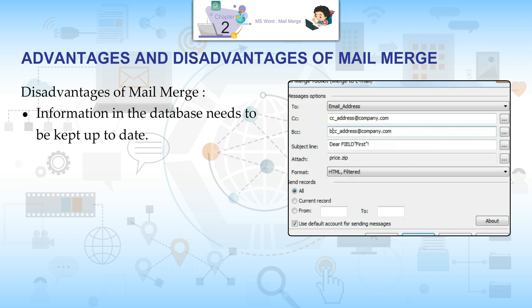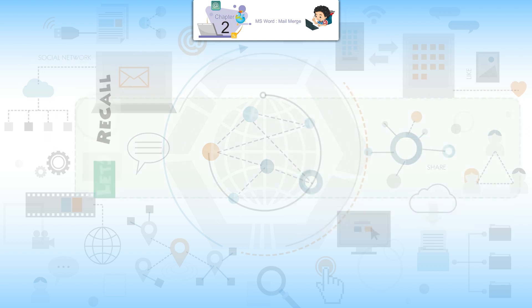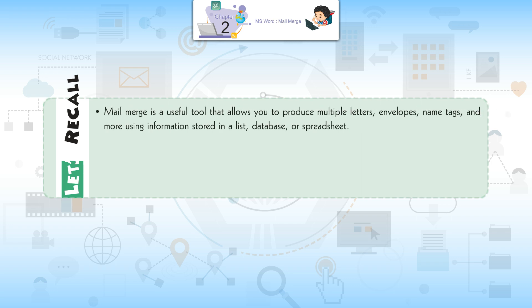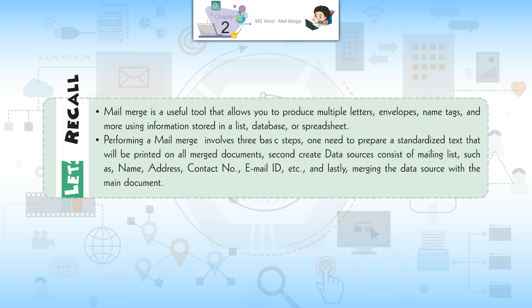Information in the database needs to be kept up to date. Let's recall: Mail Merge is a useful tool that allows you to produce multiple letters, envelopes, name tags, and more using information stored in a list, database, or spreadsheet. Performing a mail merge involves three basic steps: preparing a standardized text, creating data sources with mailing list fields such as name, address, contact number, and email ID, and merging the data source with the main document.